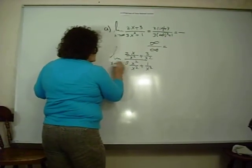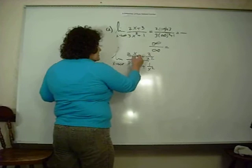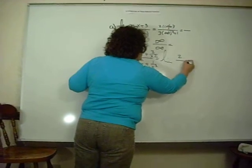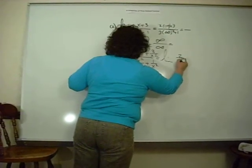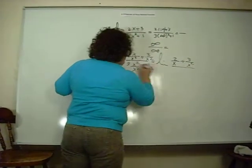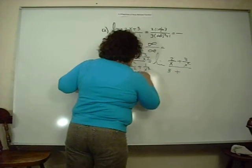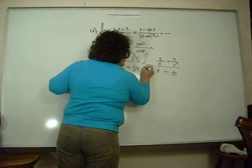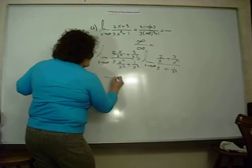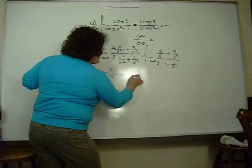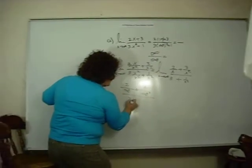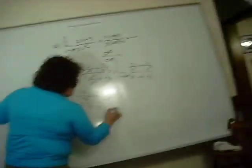As x approaches infinity, after cancellation we get the limit of two over x plus three over x squared, all over three plus one over x squared, as x approaches infinity. Now plugging in infinity: two over infinity plus three over infinity squared, over three plus one over infinity squared.